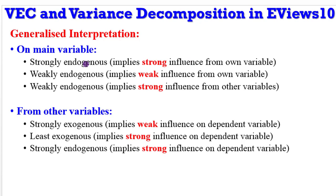If there is a weak influence from that variable on its own self, then such variable exhibits weak endogeneity. Now, if there is a strong influence from other variables in the model on that particular main variable, then we say that same main variable is weakly endogenous. If other variables exhibit a weak influence on the dependent variable, we say those variables are strongly exogenous. If they exhibit strong influence, we say they are least exogenous or strongly endogenous — least exogenous and strongly endogenous imply the same thing. These are the terminologies I will be using when interpreting the variance decomposition results.